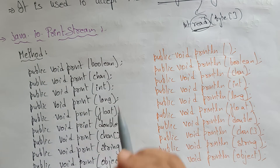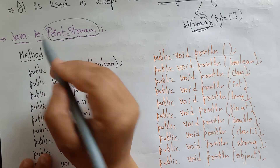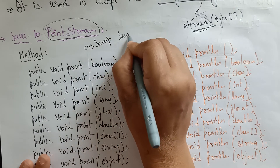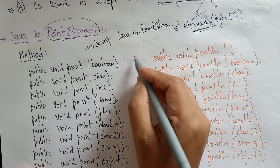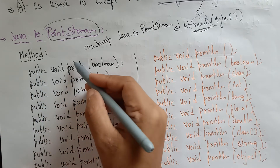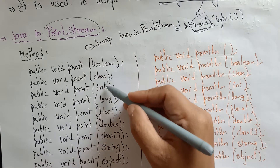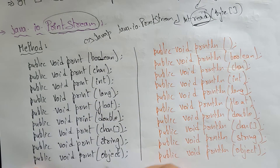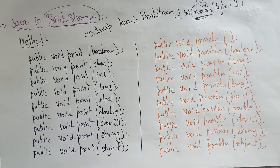The other two predefined streams are 'out' and 'error', and those are present in PrintStream. If you want to check how many methods are present in PrintStream, type on the command prompt: javap java.io.PrintStream and press enter. You can see so many methods. Some methods are related to print and some methods are related to println. The arguments inside the print method include all primitive data types: boolean, character, int, long, float, double, char.